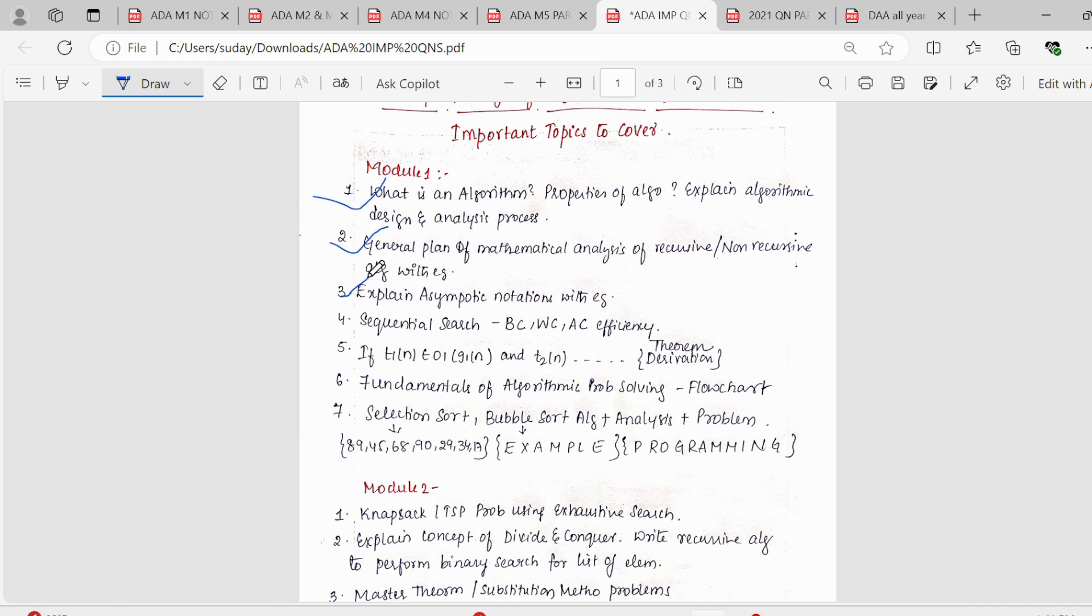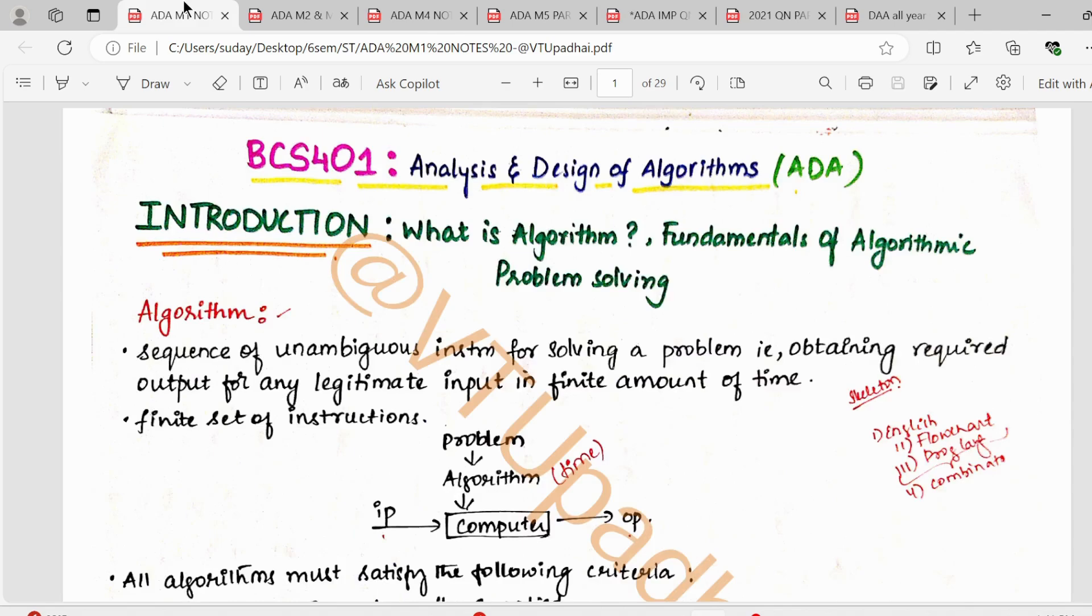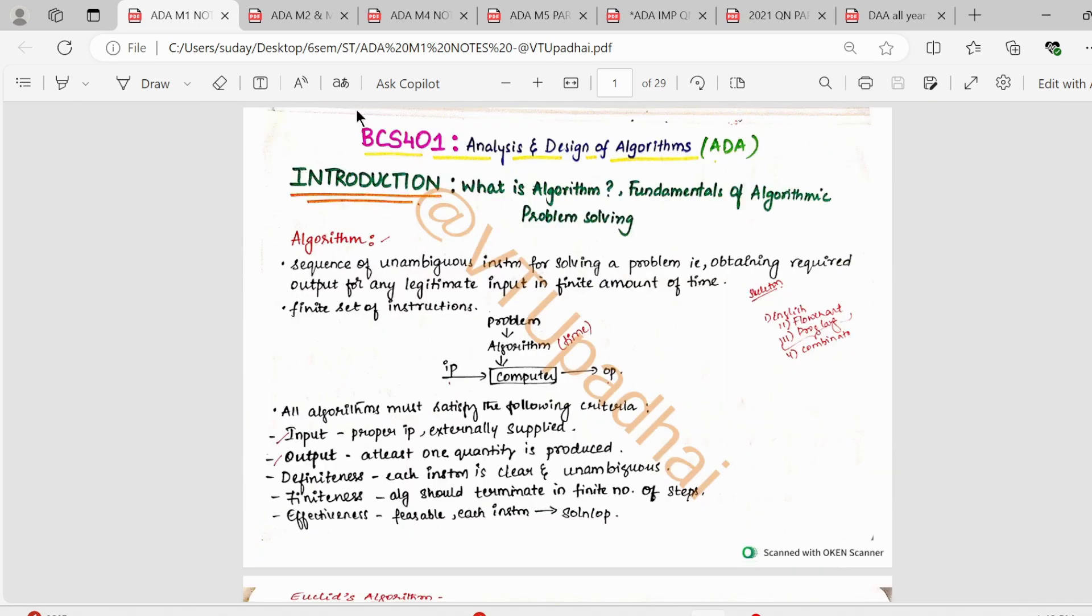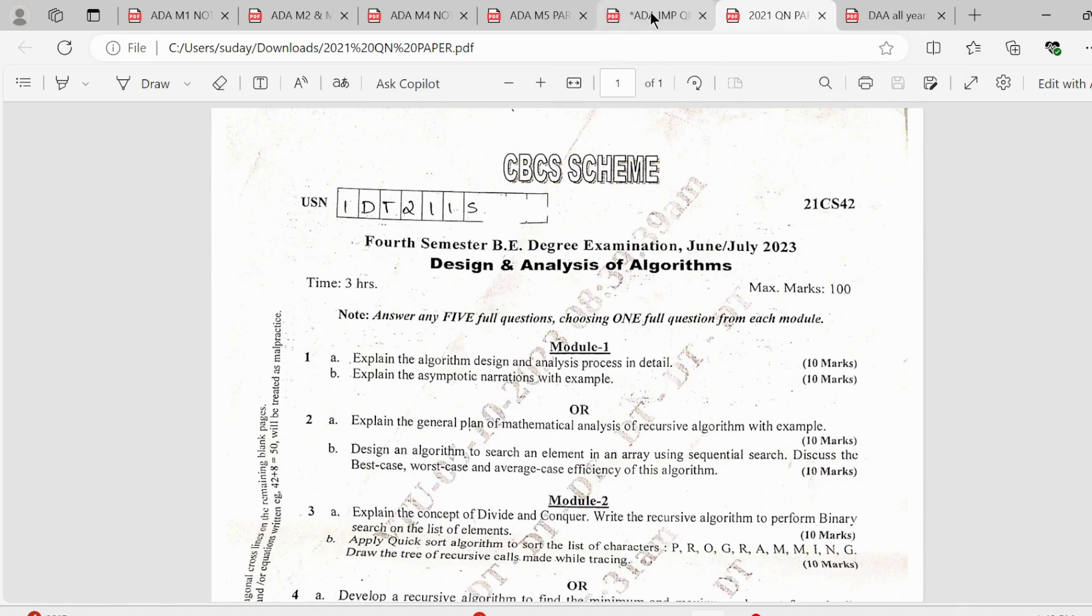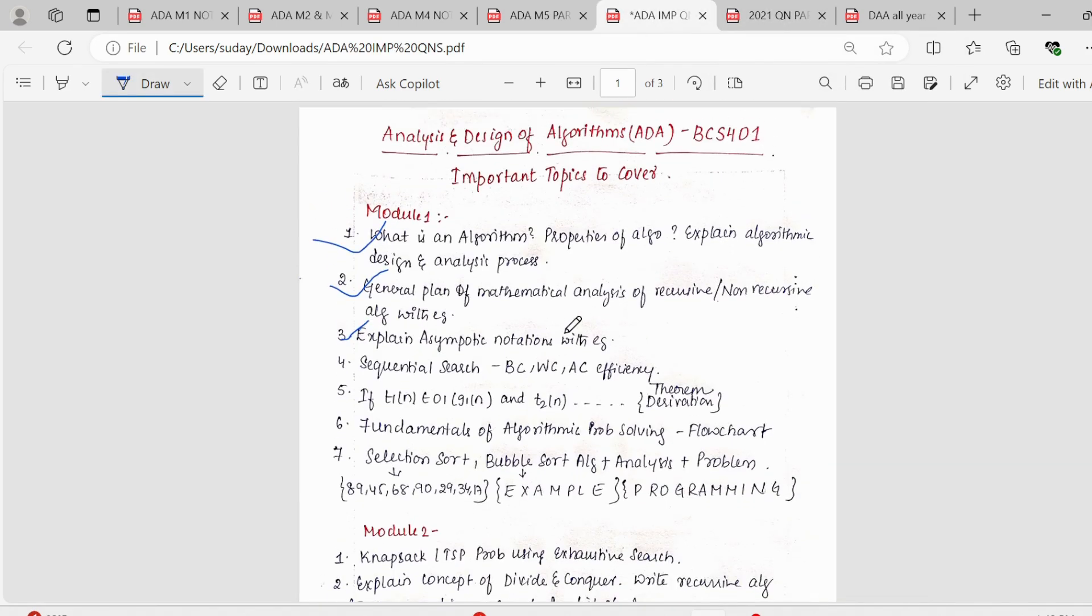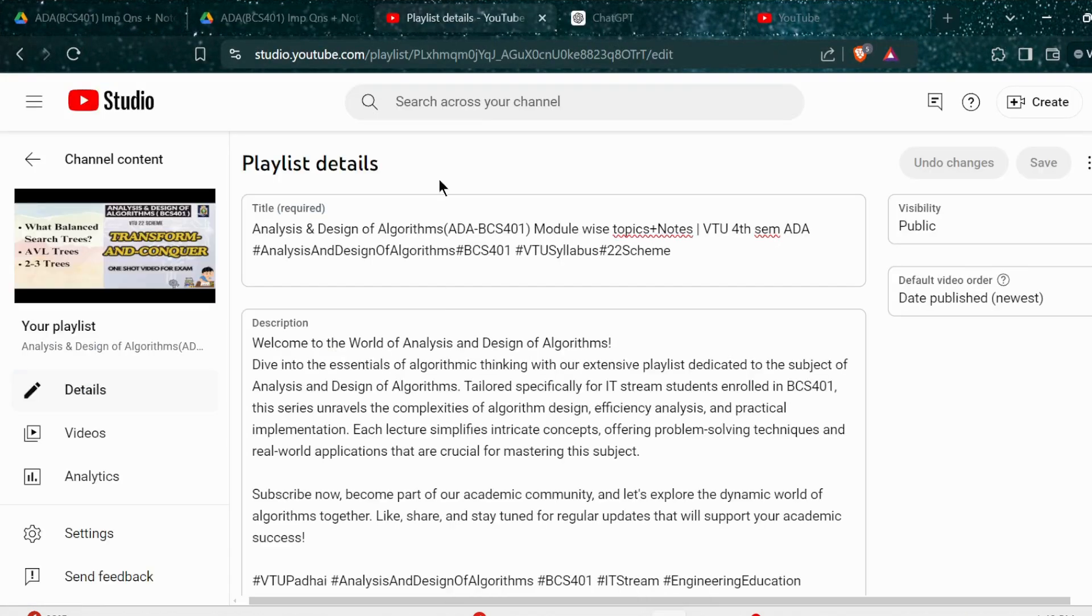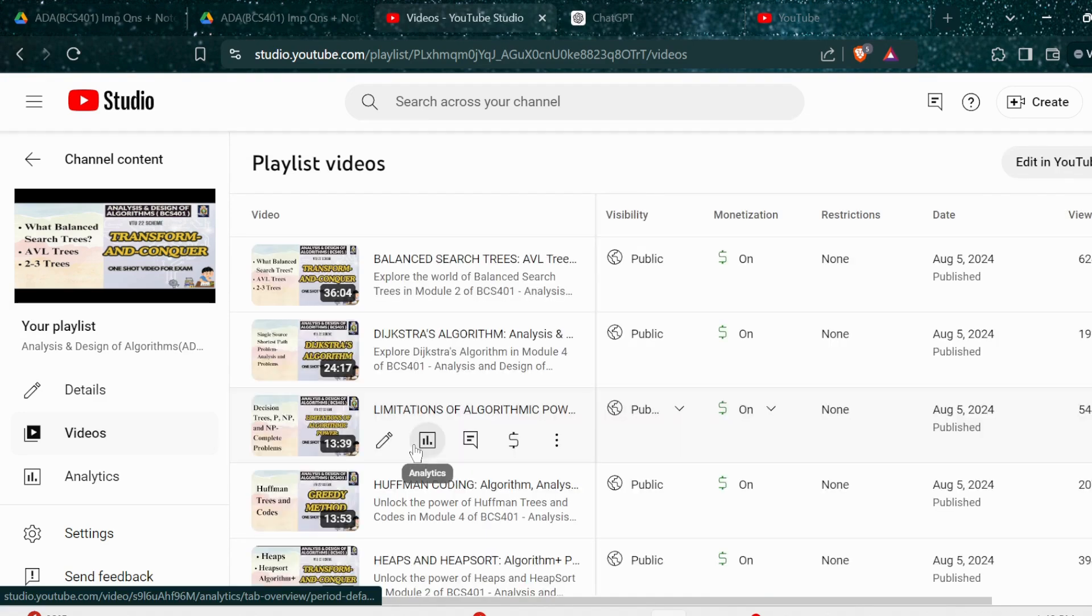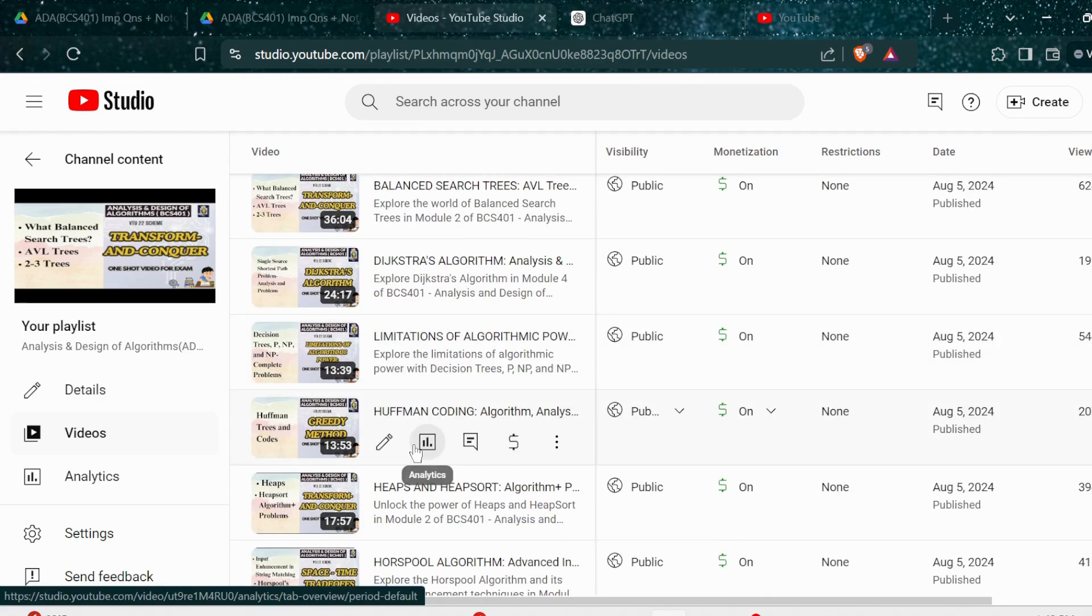Then we have asymptotic notation, big O notation, sigma, omega notation, all those questions would be asked. So make sure that you cover all these topics properly. So here are my first module notes and I have uploaded module-wise videos for each and every module, each and every topic. So you can go through my playlist. Each module is covered in three to four videos.